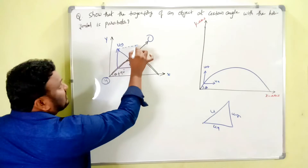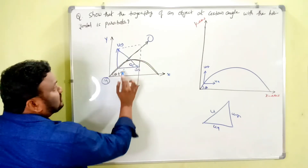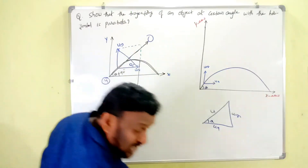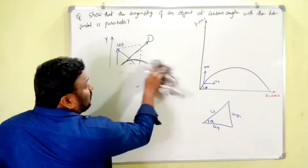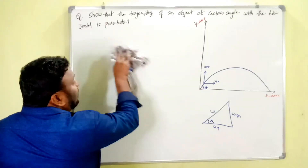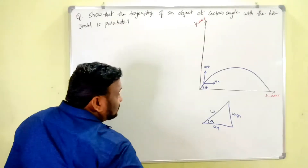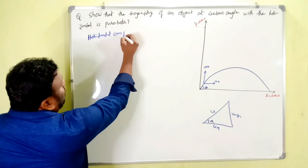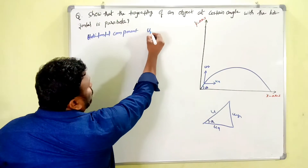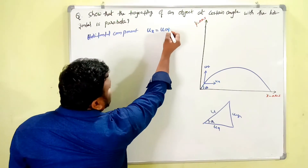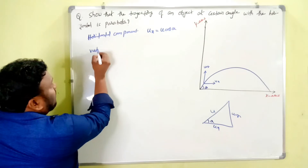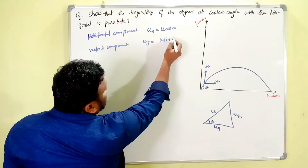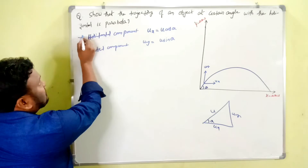We have to derive the expressions for the horizontal and vertical components. The horizontal component ux equals u cos theta, and the vertical component uy equals u sin theta. We need to remember these two expressions first.